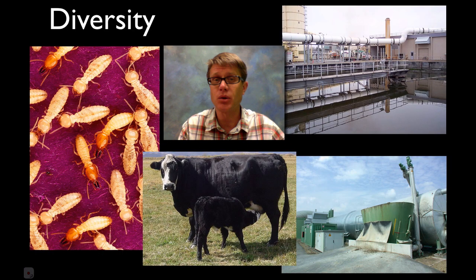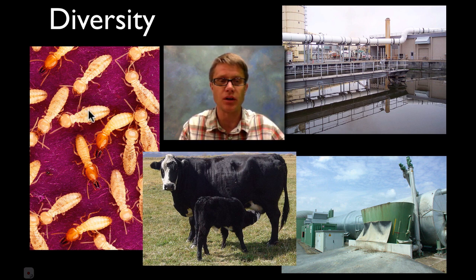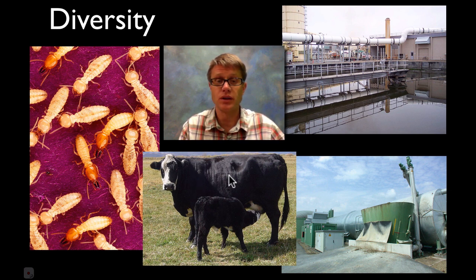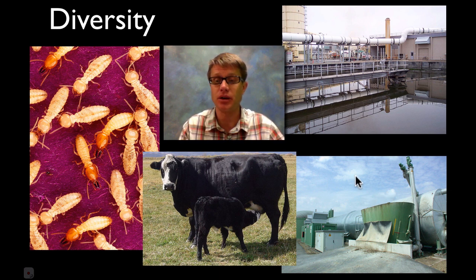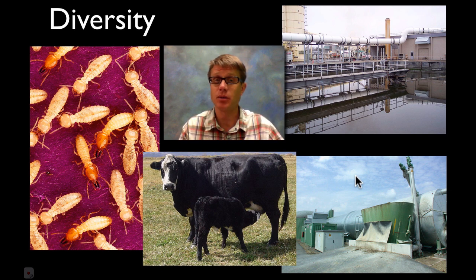Archaebacteria live everywhere on our planet. For example, a termite is able to eat wood because it has archaebacteria inside its gut that help break down cellulose. They're also really important inside the rumen of a cow to help them digest food. We also use them in the breakdown of sewage and sewage cleanup, or we build biogas using archaebacteria. So basically archaebacteria are prokaryotes, single-celled critters. They look a lot like bacteria but they're actually more related to us. They live in harsh environments but also everywhere else. I hope that's helpful.